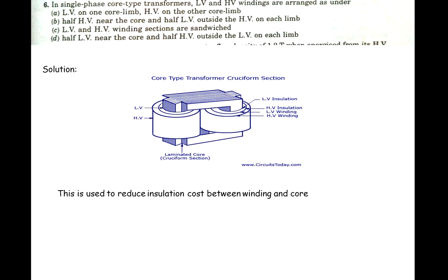If we place HV winding near the core, the insulation required between HV and LV windings due to the large potential difference would be very high and costly. By placing LV winding near the core, the insulation between LV winding and core is reduced, and the potential difference between LV and HV windings is also reduced. So both insulations — between HV and LV, and between LV and core — are reduced in this arrangement. Option D is correct.